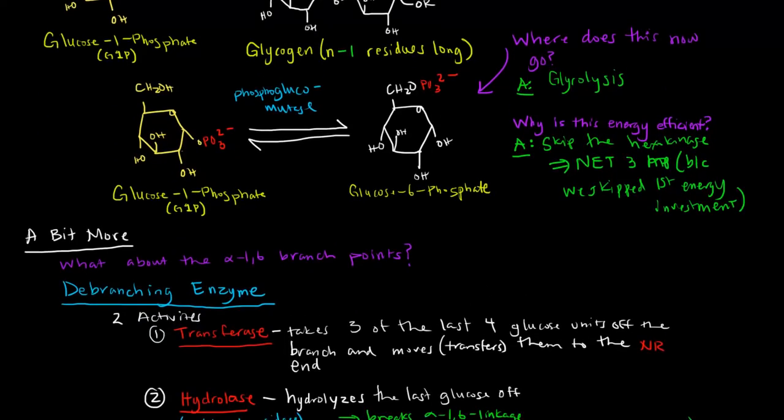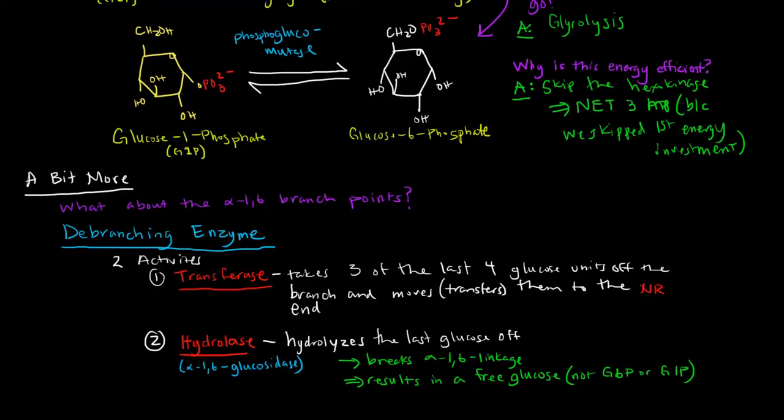As far as a bit more information about glycogen breakdown, what happens at the branch points? There's this enzyme called the debranching enzyme. In the last video, we talked about the branching enzyme. The debranching enzyme has two different activities, one being a transferase.